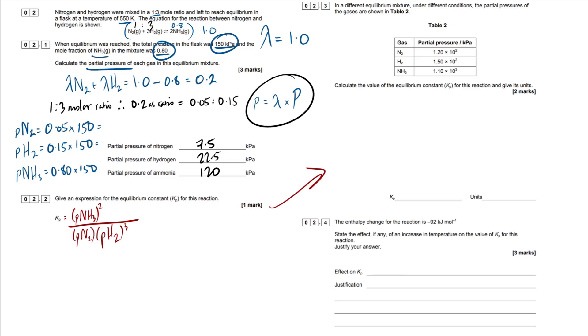It's only one mark, but we can use it in our next calculation right here. So in a different equilibrium mixture under different conditions, the partial pressures of the gases are shown in table two. So we have a bunch of values here. Calculate the value of the equilibrium constant KP for this reaction and give its units. So this is only a two marker. This is super simple, guys. Pause the video. Have a go yourself. All we're going to be doing is plugging in our values into the equation. As long as you've got your KP expression correct, you should get this correct as well. The only area where people may struggle is the units, but I'll demonstrate that in a second.